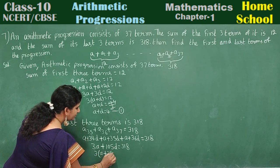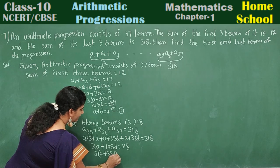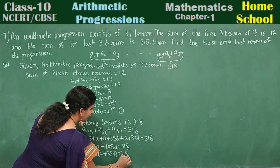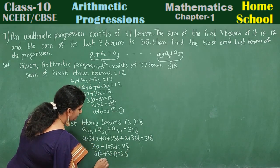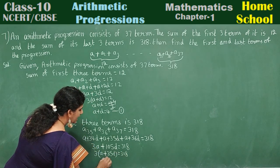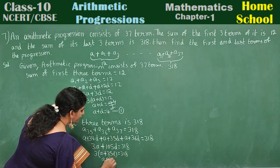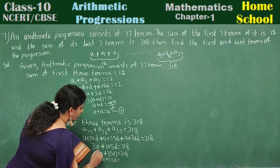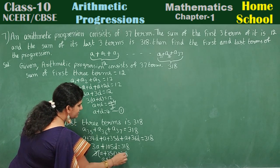Simplifying the last three terms equation: adding all the a terms gives 3a plus 105d equals 318. Dividing through by 3, a plus 35d equals 106. Mark this as equation 2.